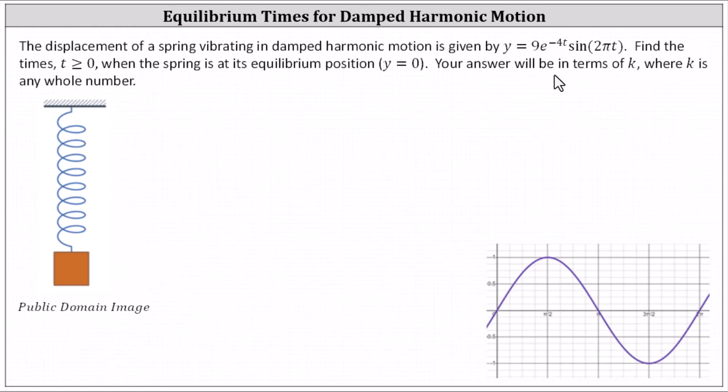We want the answer in terms of k, where k is any whole number. To find the times, we set y equal to zero and solve the resulting equation, which gives us zero equals nine times e to the power of negative 4t times sine of 2πt.